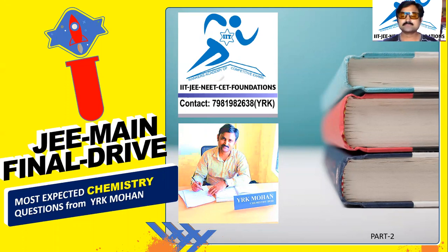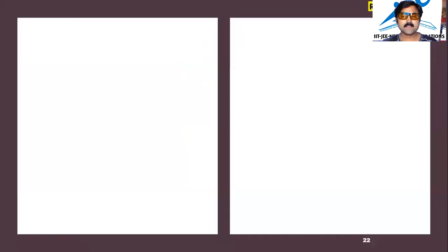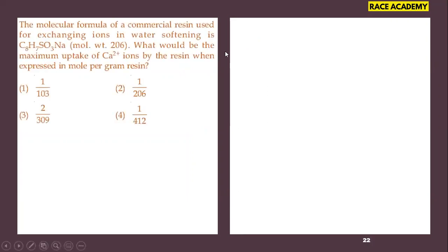Let us join the session. Here, the molecular formula of a commercial resin used for exchanging ions in water softening is C₈H₇SO₃Na, with molecular weight 206. What would be the maximum uptake of calcium by the resin, expressed in moles per gram resin? See carefully — this is discussed from the hydrogen chapter in the hardness of water concepts.